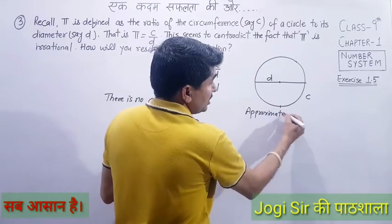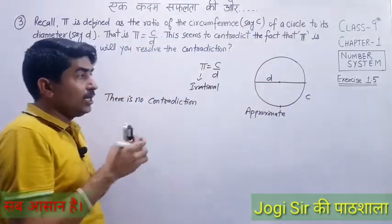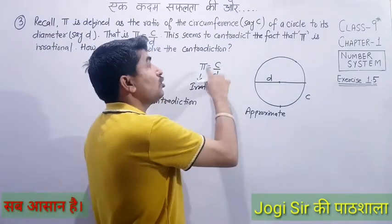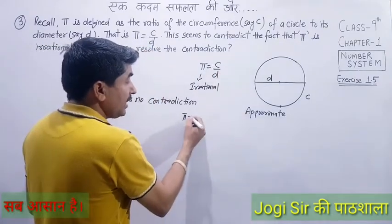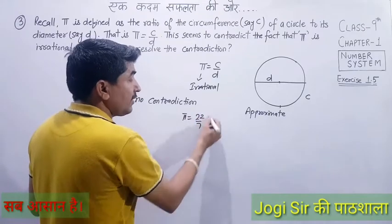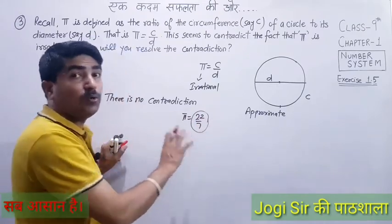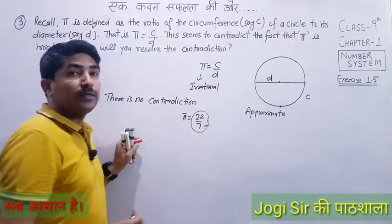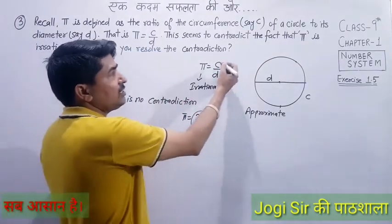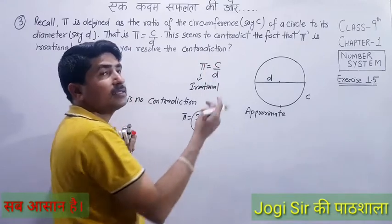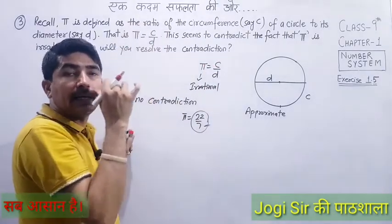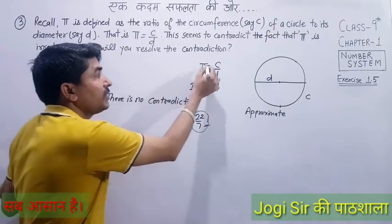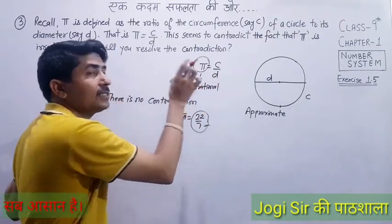Whenever we measure anything with a scale, it gives us only an approximate value. π = 22/7 is also an approximate value. So when we measure C and d with a scale, we don't know how far the irrational parts go. That's why there is no contradiction here — π is always considered irrational.